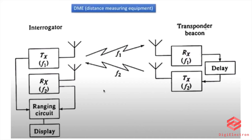We have an interrogator and transponder beacons. The interrogator is in the aircraft. The transponder beacons are on the ground. We have a DME and an aircraft. We have a distance.